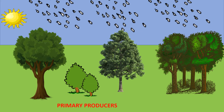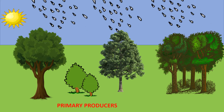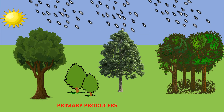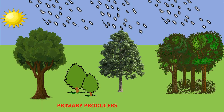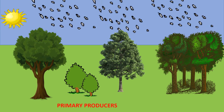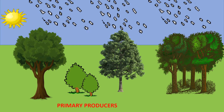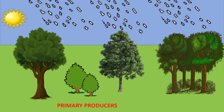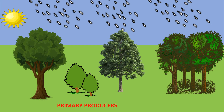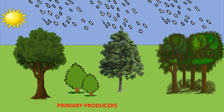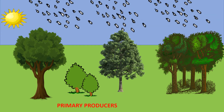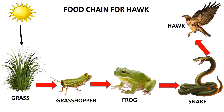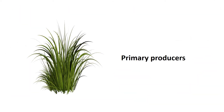Plants are called primary producers because, using the soil, water, and sunlight, they prepare their own food through photosynthesis. In this example, grass is called the primary producer.